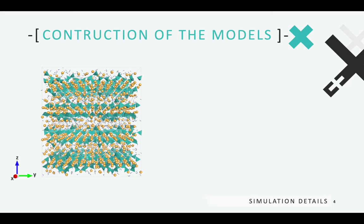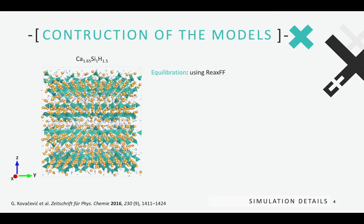Here you can see the initial structure of the CSH model, which was built taking as a starting point the crystalline structure of Tobermorite 11 Angstrom. The chemistry was modified to reach a calcium-to-silicon ratio of 1.65, following the procedure described by Kovačević and co-workers. Then the CSH model was equilibrated using an inter-reactive force field ReaxFF, which has demonstrated to accurately reproduce the structure, elastic properties, and chemical reactions in calcium silicates. This equilibration was performed in the isobaric-isothermal ensemble for one nanosecond at room conditions. The simulation time is enough to reach a constant value of the water density in the interfacial space between silicate layers.